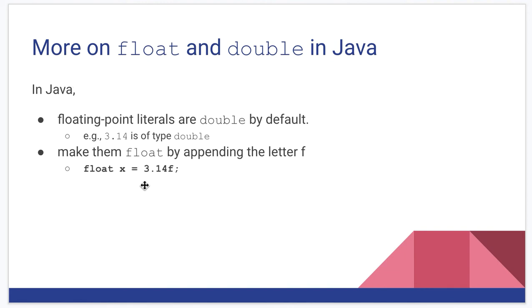Because again these are approximations. A little bit more on float and double. In Java any time we write a floating point literal it is interpreted as a double data type by default. So if I were to write 3.14 in my code it's automatically a double. If I wanted to interpret it as a float I actually have to append the letter F at the end. So you might want to keep that in mind, might be useful later on.